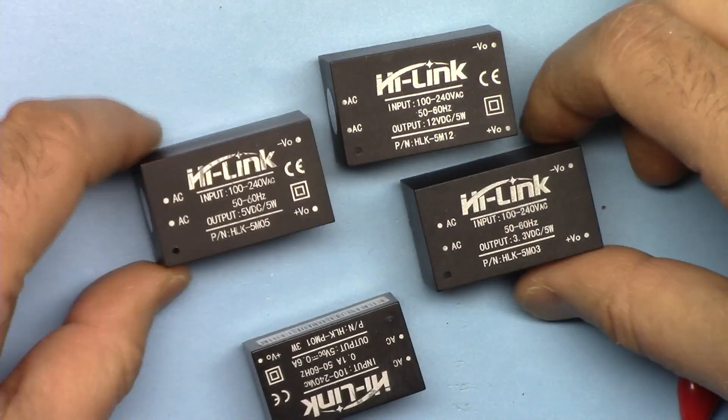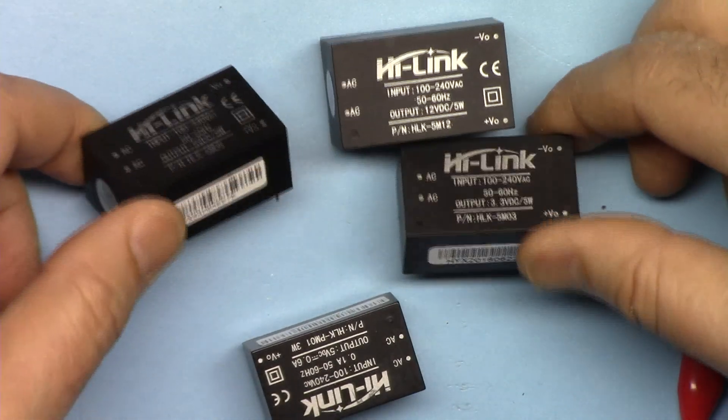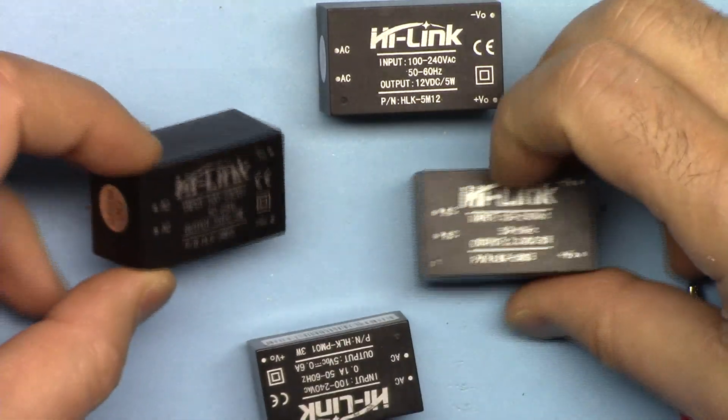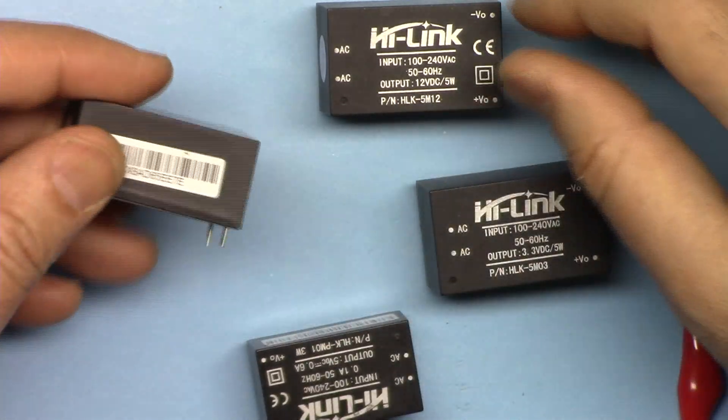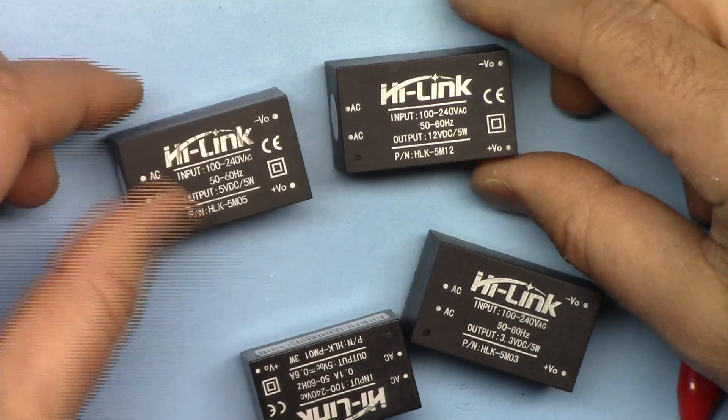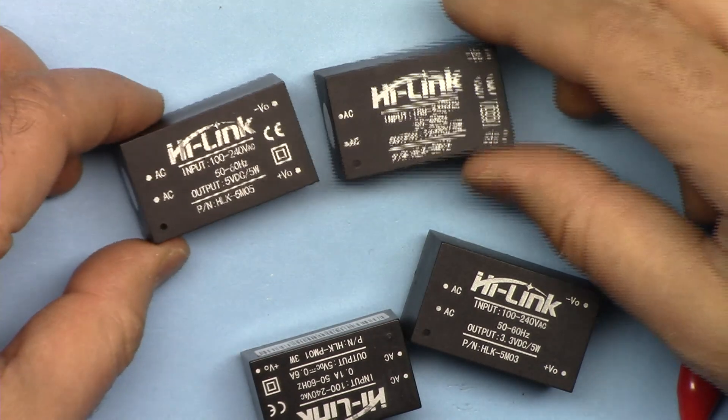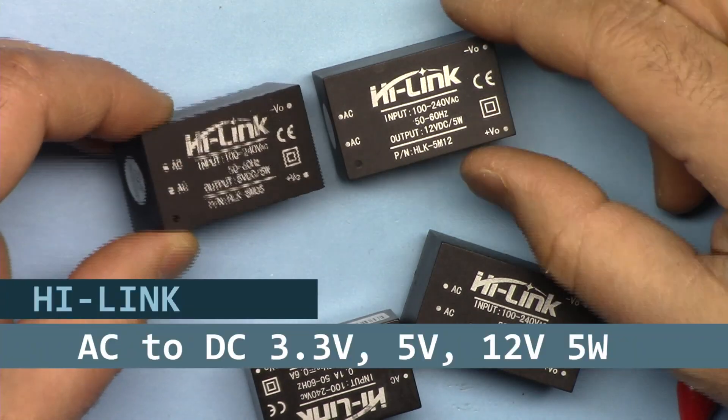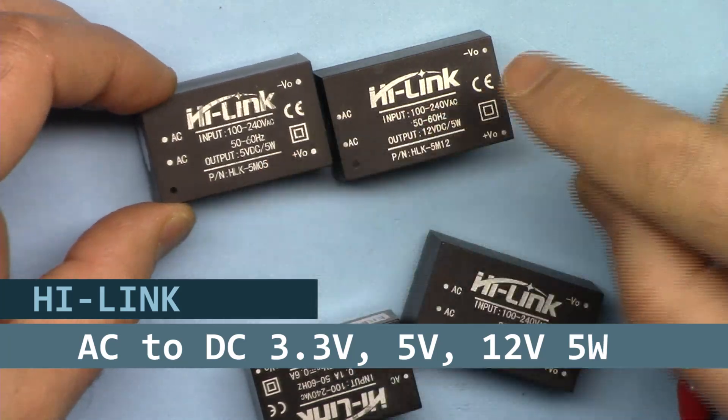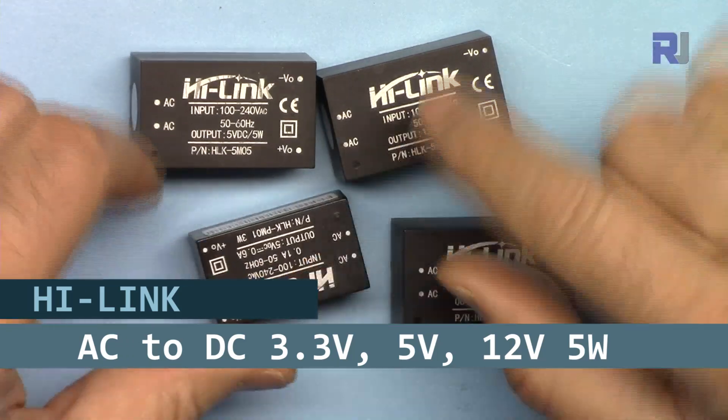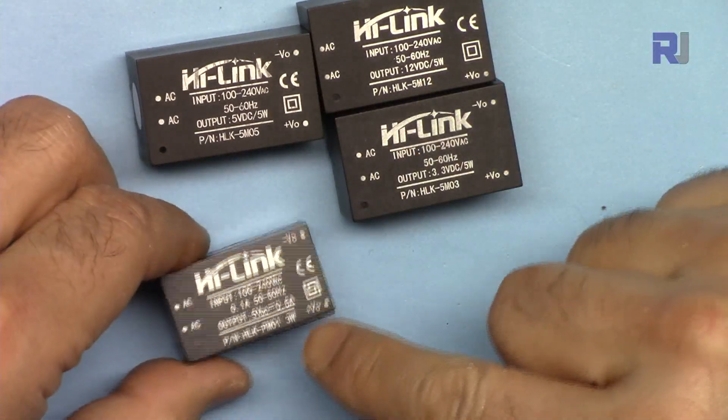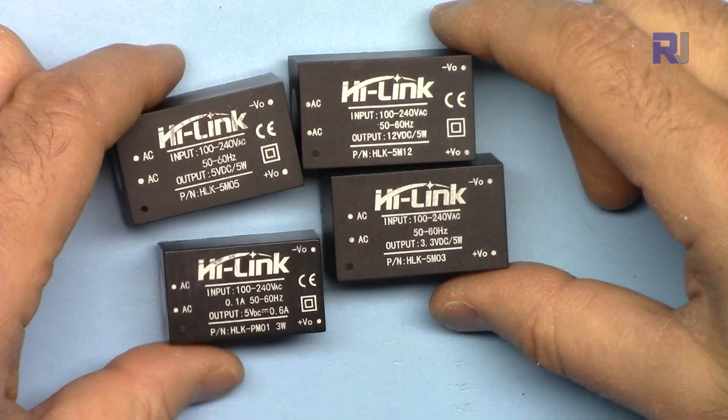Hi, welcome to a product test and review by Robojax. In this video we are going to test these HiLink AC to DC converter modules with 120 volts input, which is in North America and some other countries, and also with 240 volts input. The outputs are 5 volts, 12 volts, 3.3 volts. These are 5 watt versions, and I also have a 5 volts 3 watt version.